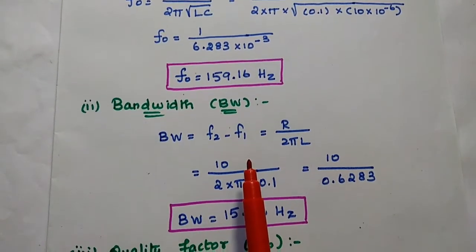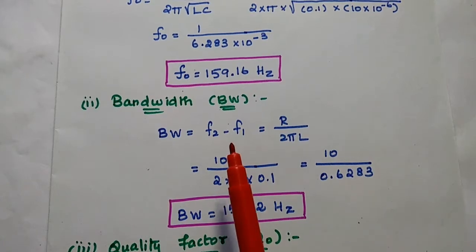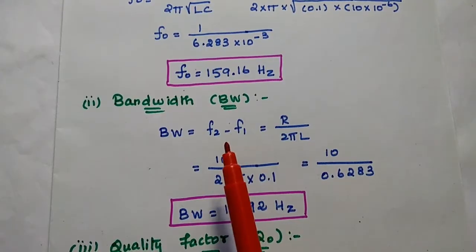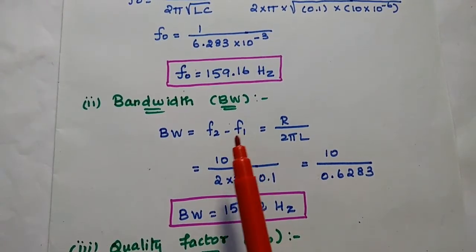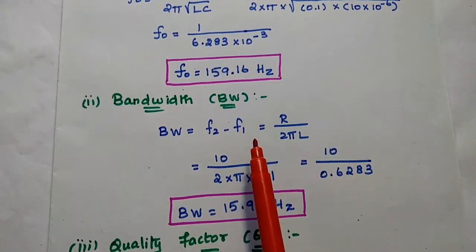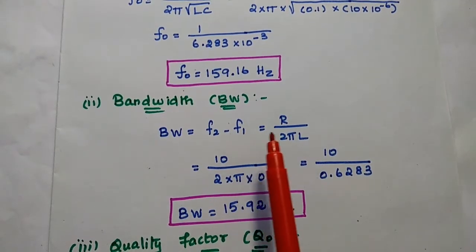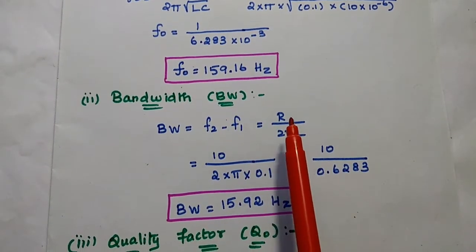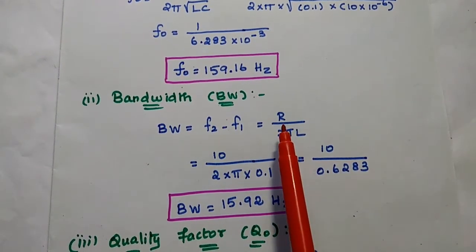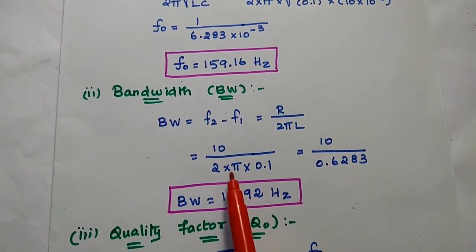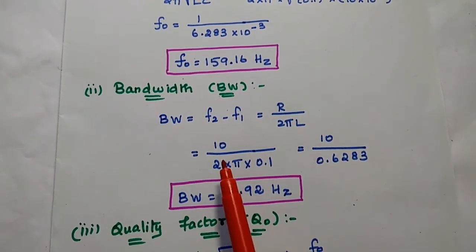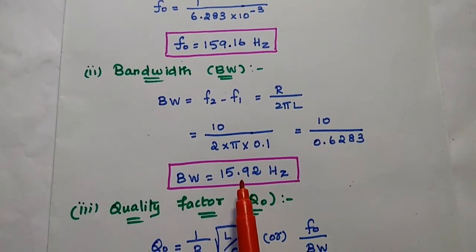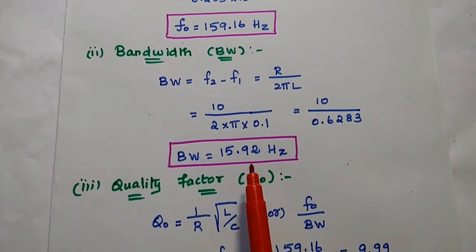Next we are going to find out the bandwidth. Bandwidth is equal to the difference between the upper cutoff frequency and lower cutoff frequency at half power range — simply F2 minus F1. It can also be obtained using the formula R by 2πL. Substituting R equal to 10 and L equal to 0.1, we get the bandwidth as 15.92 hertz.